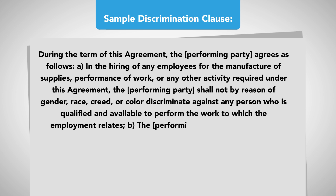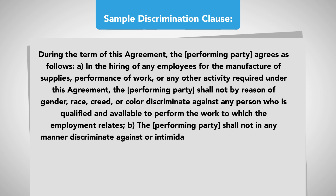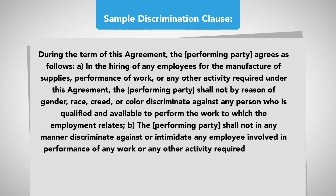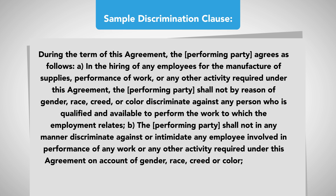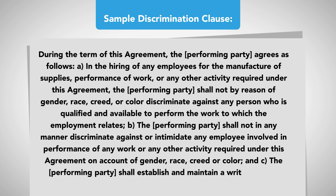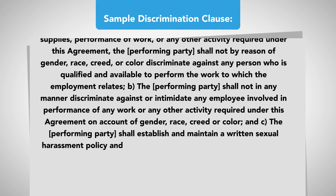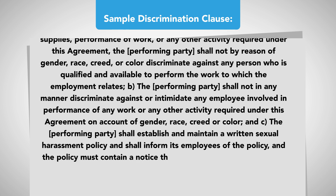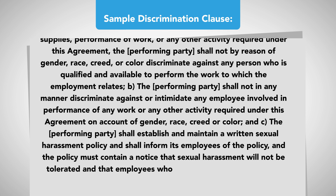B: The performing party shall not in any manner discriminate against or intimidate any employee involved in performance of any work or any other activity required under this agreement on account of gender, race, creed, or color. And C: The performing party shall establish and maintain a written sexual harassment policy and shall inform its employees of the policy, and the policy must contain a notice that sexual harassment will not be tolerated and that employees who practice it will be disciplined.